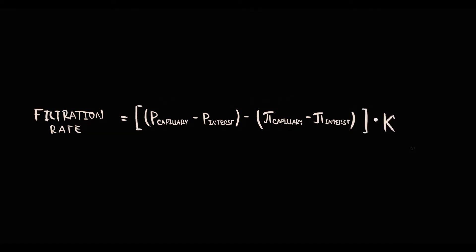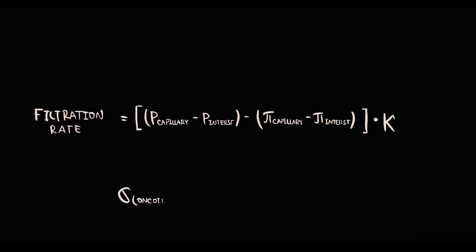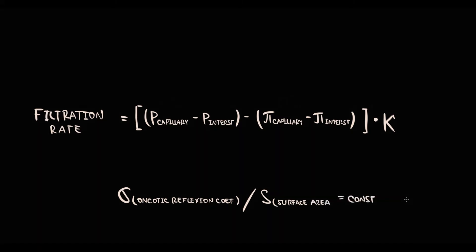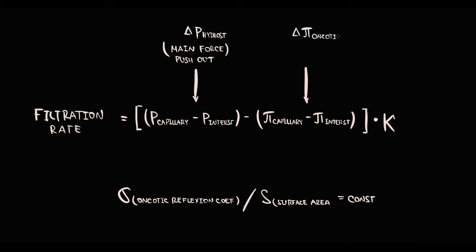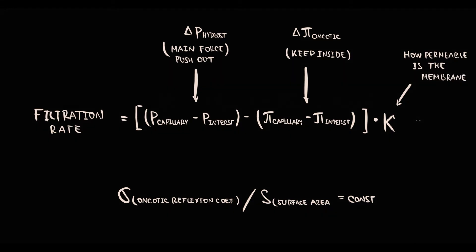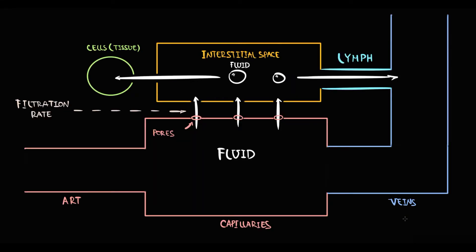This is a simplified version of the equation — we suppose that values such as oncotic reflection coefficient and surface area are constant. Hydrostatic pressure difference is the main driving force that pushes fluid out of the capillary. Oncotic pressure difference is the force that draws fluid inside the capillary. And hydraulic conductivity describes how permeable the membrane is. This is the general concept of fluid exchange that can be applied to every tissue.